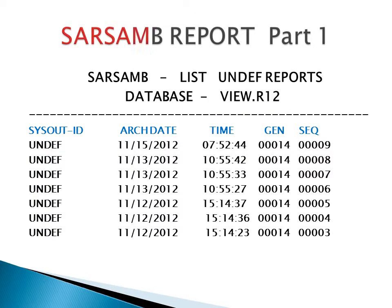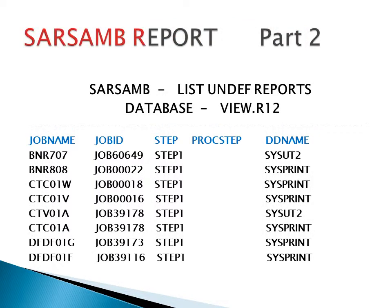The report looks like this. The sysoutid, date, time, generation, and sequence of each report is listed. If you PF11, you will see the next part of the report. It shows the job name, job number, step name, proc step name, and DD name.